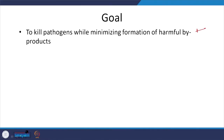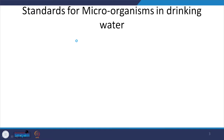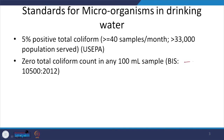The goal: we want to inactivate pathogens — or kill them in layman's terms — while minimizing the formation of harmful disinfection byproducts, which is of great relevance in the Indian context. In India for drinking water, the standard is 0 total coliform count in any 100 mL sample.